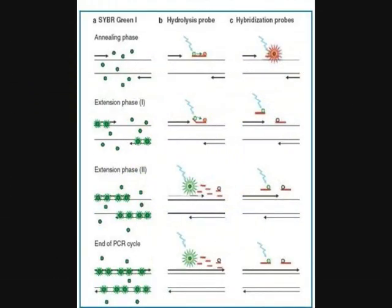In this picture, SYBR Green, hydrolysis probe, and hybridization probe are shown during the annealing phase, extension phase, and end phase of the PCR cycle.